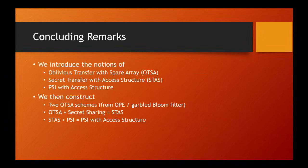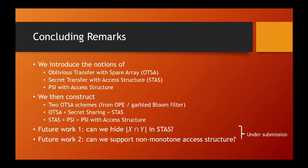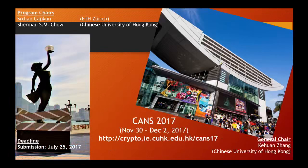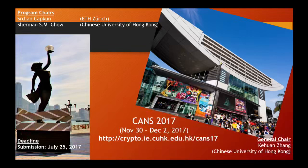To conclude, we introduce a few new notations and present a series of constructions which lead to our PSI with access structure. The first future work is to hide the size of the intersection in STAS. Another interesting future work is to support non-monotone access structure. Yongchun and Sherman solve these two problems in another paper. They can be contacted at these addresses. Finally, an advertisement from Sherman: the submission deadline of CCS is coming soon.